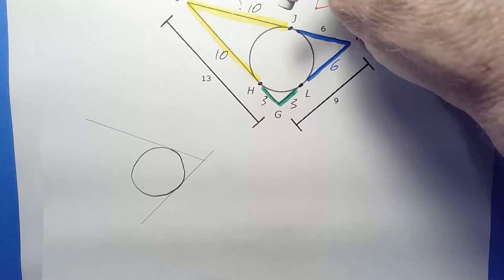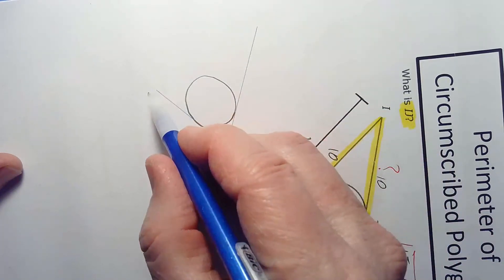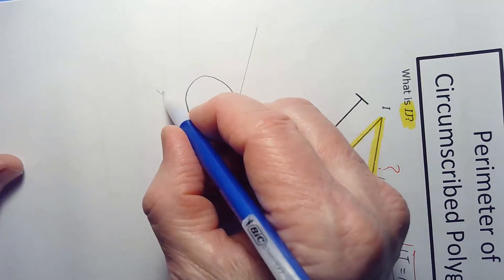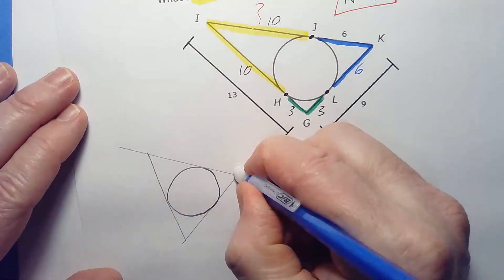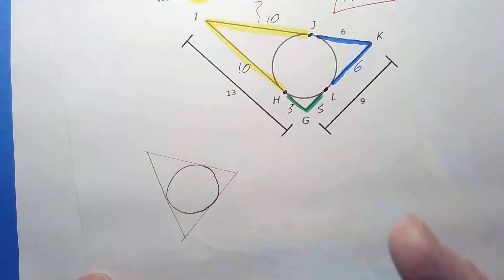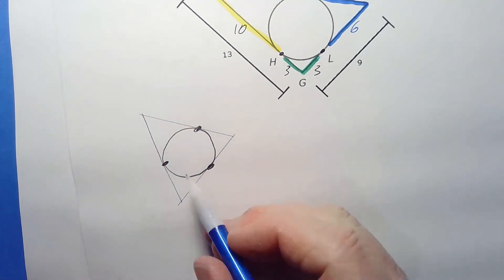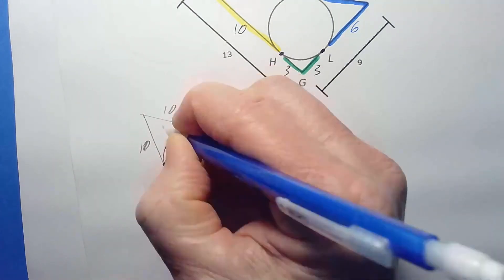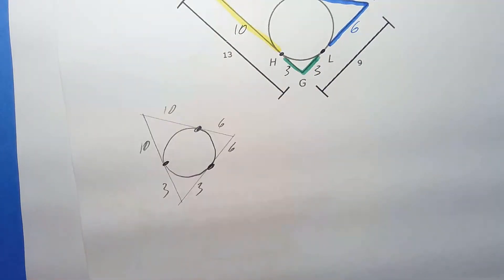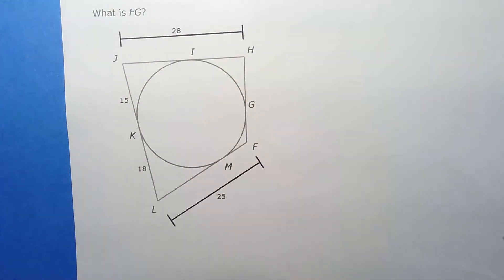Your hand likes to go in one direction — the natural pivot of your elbow. So I just eyeball it and draw across. Make dots at the tangent points so you have somewhere to write your numbers. This is going to be really helpful for the next problem, which is a little more complicated. It's really nice to have a way to keep track of things.